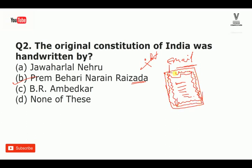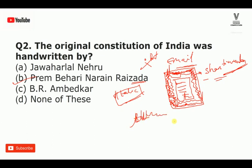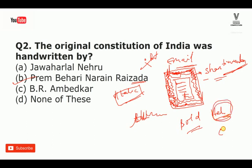Artists were used for the border design. Prem Bihari Narayan was the calligrapher who wrote the Constitution. The writing style was made in italic — a font style like cursive. The borders, handwriting, patterns, Arabic bold, and italic style were all part of the Constitution's design. Italic is a type of font style different from the normal ABCD font.